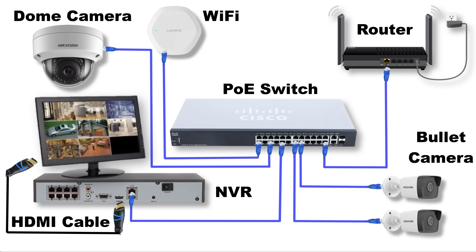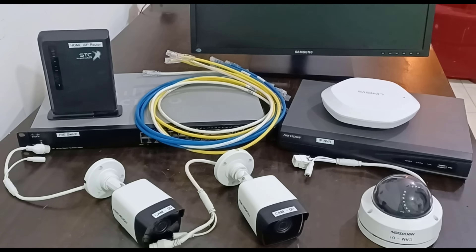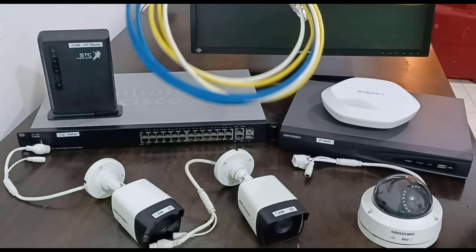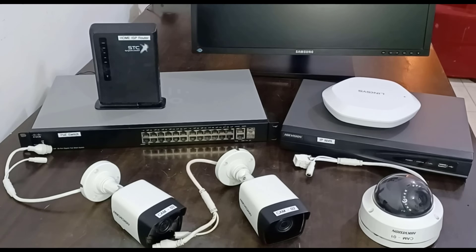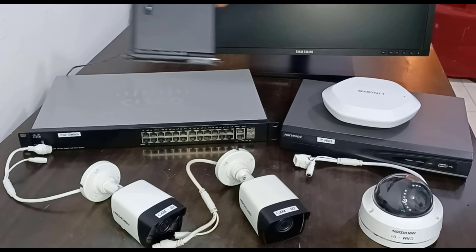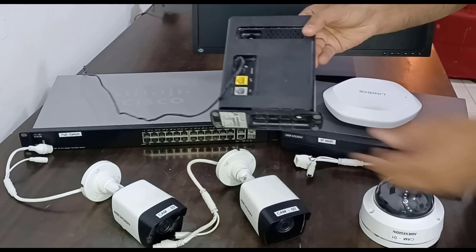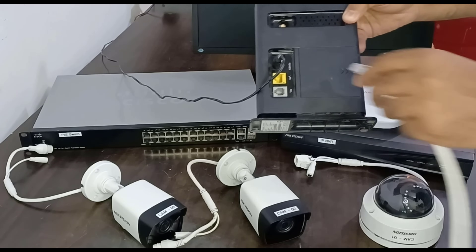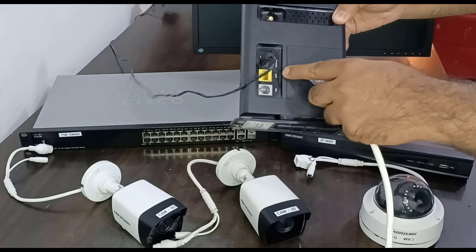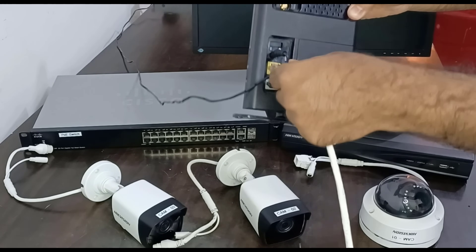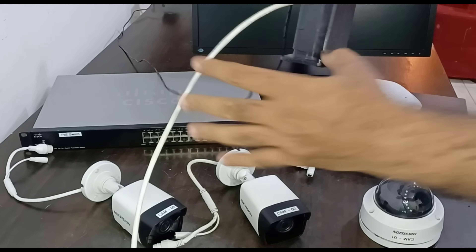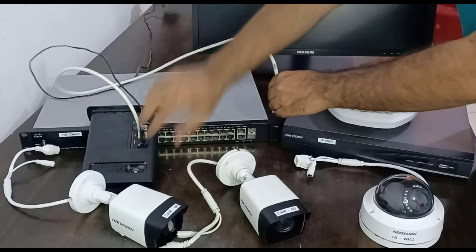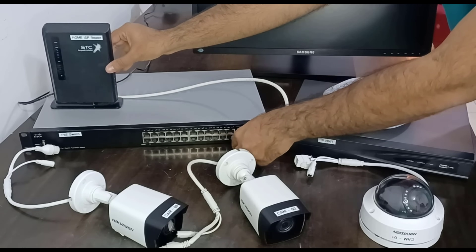To do the physical connectivity, I'm going to use a couple of Cat6 network cables or patch cords. Here is my home router — it's a 5G device and DHCP is enabled by default. As per our network diagram, I'm going to use this Cat6 network cable and connect one end to the LAN port of my home router, and the second end to my PoE switch — let's connect it to port 24 on the PoE switch.